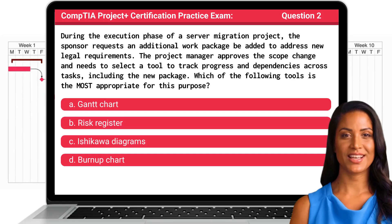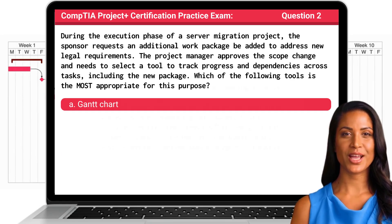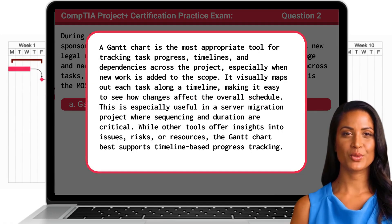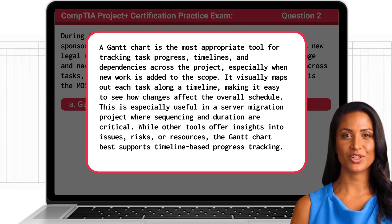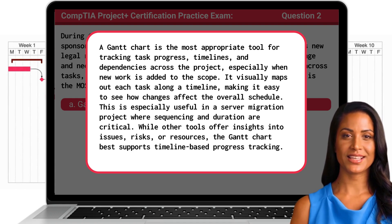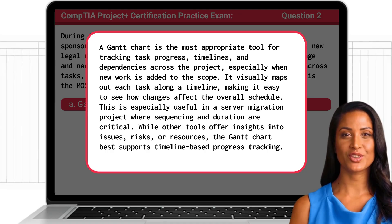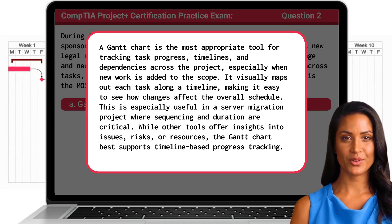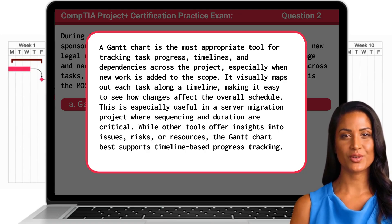The answer is A: Gantt Chart. A Gantt Chart is the most appropriate tool for tracking task progress, timelines, and dependencies across the project, especially when new work is added to the scope. It visually maps out each task along a timeline, making it easy to see how changes affect the overall schedule. This is especially useful in a server migration project where sequencing and duration are critical. While other tools offer insights into issues, risks, or resources, the Gantt Chart best supports timeline-based progress tracking.